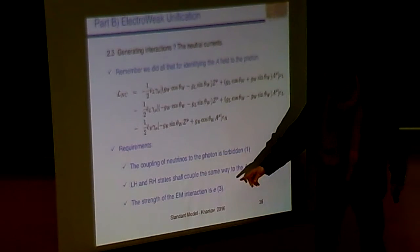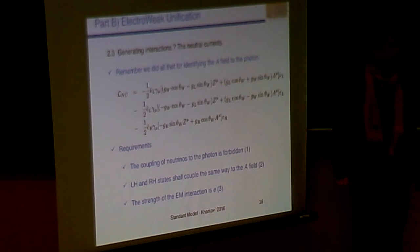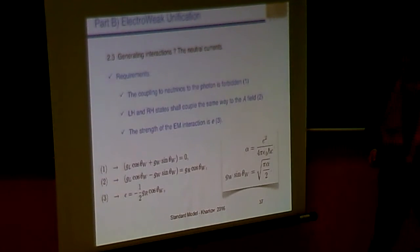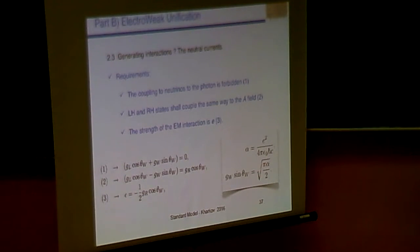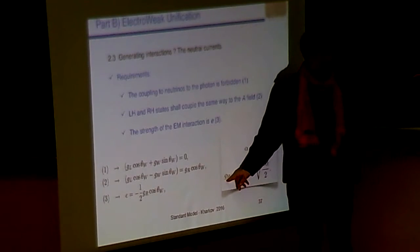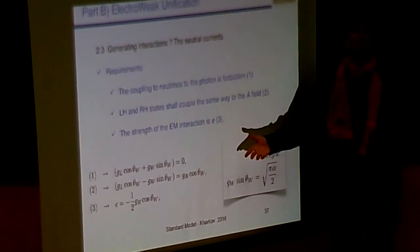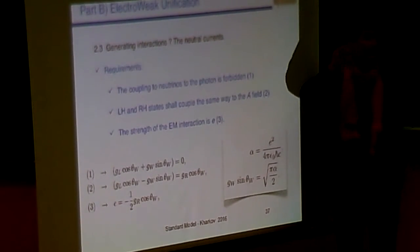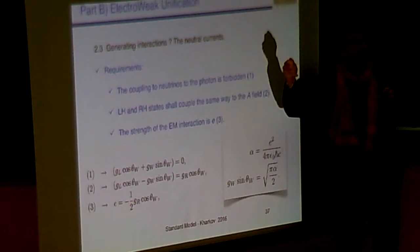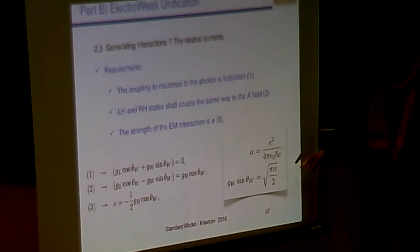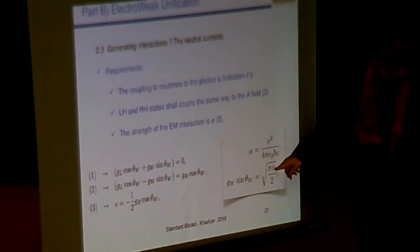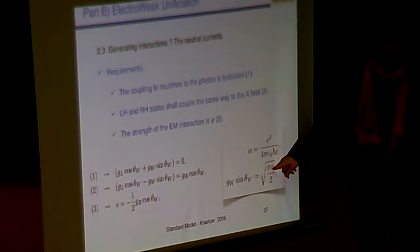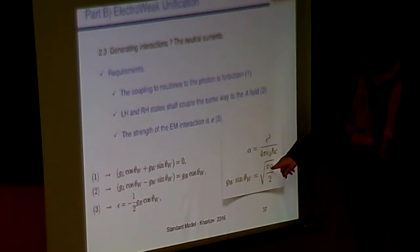So, I want the right-handed and the left-handed to be democratically defined. G_R means what is for L should also work for R. G_R cosine theta W must be equal to the left-handed coupling. Second equation. And eventually, I want electromagnetism. So, the coupling constant of the electromagnetic interaction must be the electric charge. First, second, third conditions. They are written over there. And I can provide this interesting synthesis.